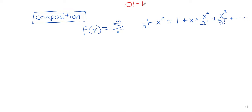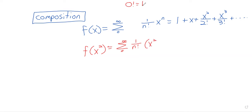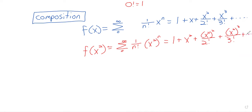Although I wasn't using this language yesterday, I took a composition — I looked at e to the x squared. To take this composition, you just do it in the natural way: replace x with the new inside function. So it becomes one plus x squared plus x squared squared over two factorial plus x squared cubed over three factorial, and so on.